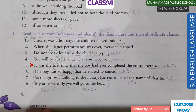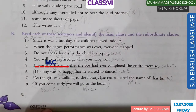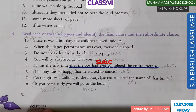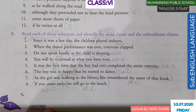Now fifth: 'It was the first time that the boy had ever completed the entire exercise.' 'It was the first time' is the main clause and 'that the boy had ever completed the entire exercise' is the subordinate clause. Sixth: 'The boy was so happy' is the main clause and 'that he started to dance' is the subordinate clause.